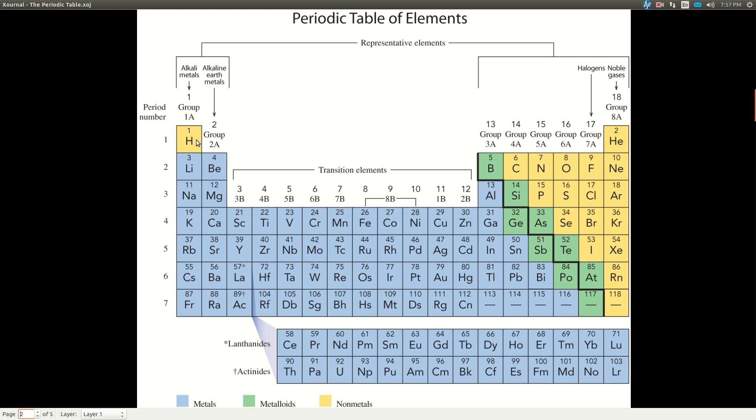Now, the groups, also called families, are the columns. And there's names for some of those, but not others. The alkali metals, alkaline earth metals, halogens, and noble gases. We'll see those in a second.